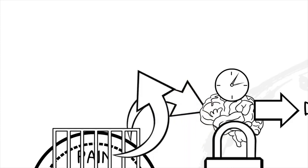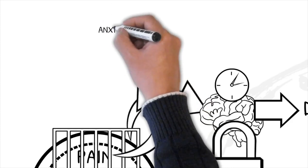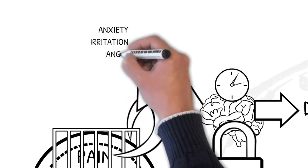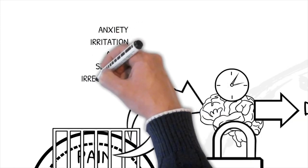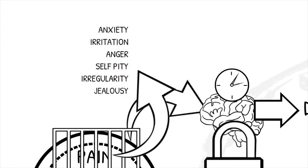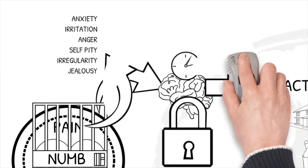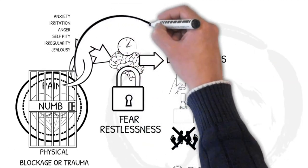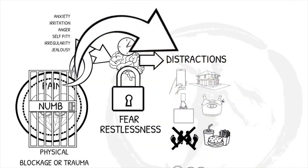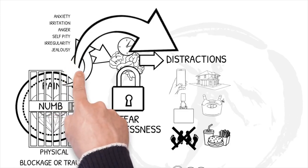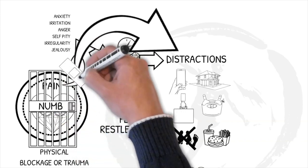Unsolved pain breaks through in the form of symptoms like anxiety, irritation, anger, self-pity, irregularity or jealousy. It's obvious we don't want to feel that way. And that's why we start hunting for more and new numbing distractions and want to hold on to our current distractions that serve as a band-aid away from our unsolved feelings.